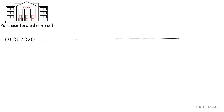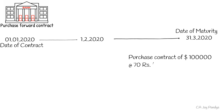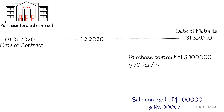Three dates are relevant: 1st January 2020, 1st February 2020, and 31st March 2020. 1st January 2020 is the date of contract, and 31st March 2020 is the date of maturity. On maturity, the bank has two positions: number one, purchase a contract of 1 lakh dollars at rupees 70 per dollar; and for covering the position, it will enter into a sale contract of 1 lakh dollars. On 1st February 2020, the customer approaches the bank to cancel the contract.